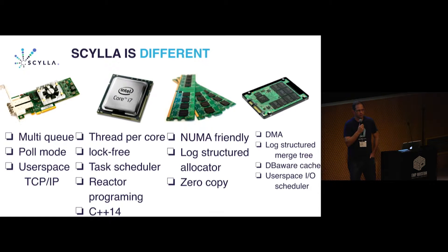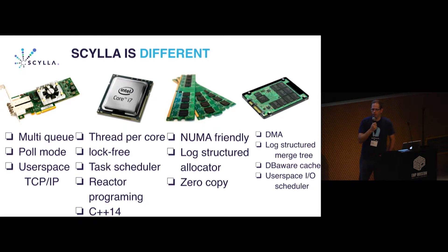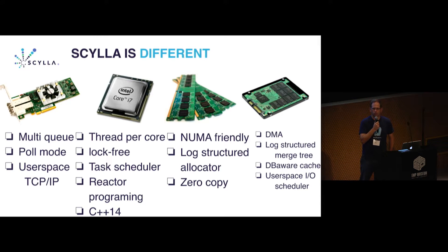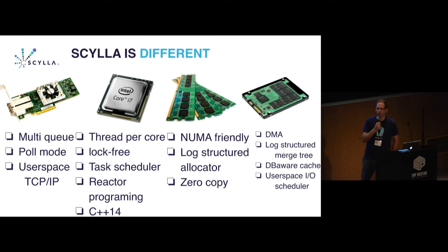Why are we different? We can take advantage of a multi-queue network architecture if you have that. We can take different threads in your user space and drive them directly into the network so we don't have the kernel in between. We can use caching in a more advanced and efficient way so we don't just page tons of pages from your disk into memory — we make it more efficient with our own scheduler.